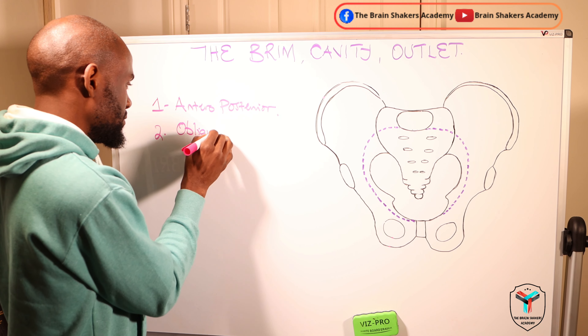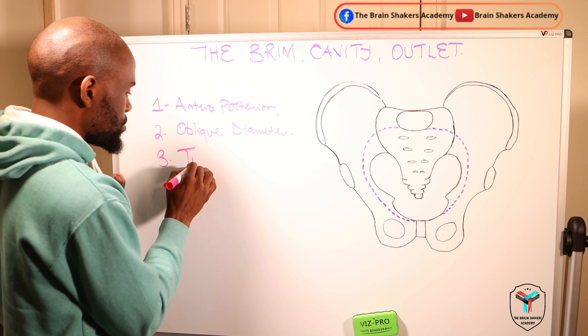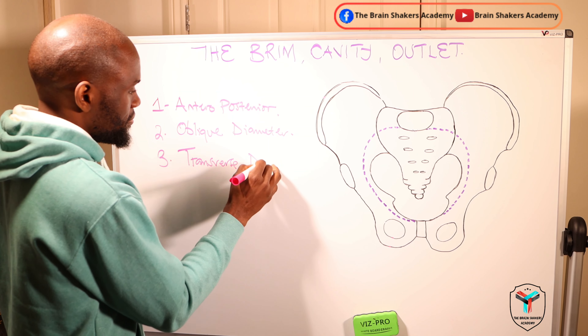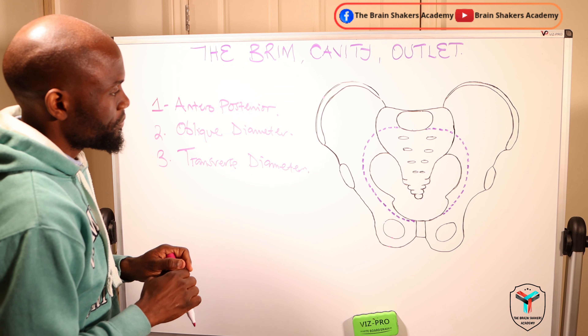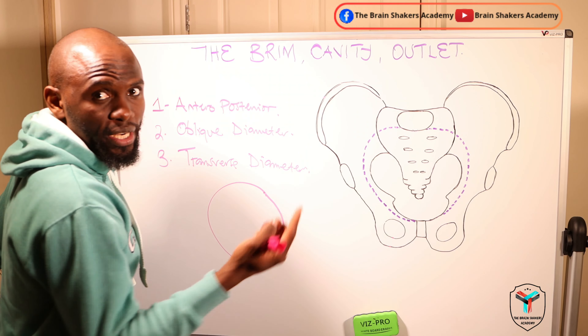The pelvic brim, the pelvic cavity, and the pelvic outlet are very important parts of the pelvis for you to understand and know. The fetus is going to go through these three in order to be delivered. Now, before we look at the pelvic brim, we need to understand that there are three main types of diameters: the anteroposterior diameter, the oblique diameter, and the transverse diameter.